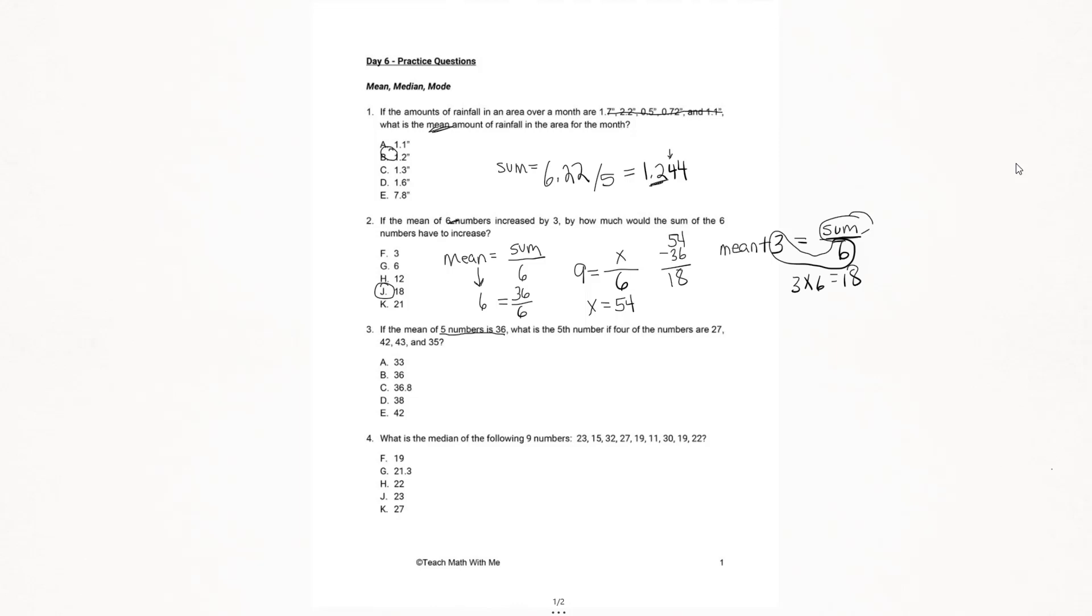We have five numbers and a mean. So we know the mean is 36. We can already write this out. Here's our sum. And we have four of the five numbers. We're looking for this fifth number. We know our sum already is 27 plus 42 plus 43 plus 35 plus that fifth number. That's what we're looking for, an x value. When we add these numbers, we get 147.